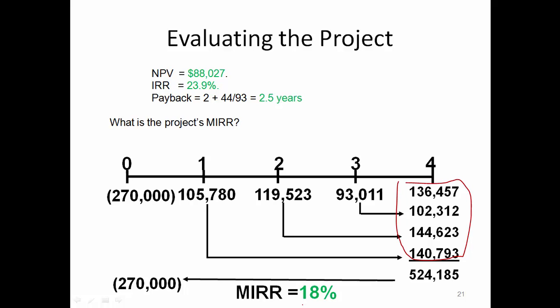According to the NPV, IRR, or MIRR calculations, the project has a positive NPV, and both the IRR and modified IRR are greater than the cost of capital of 10%. So this is a very decent project and the company should accept the project.